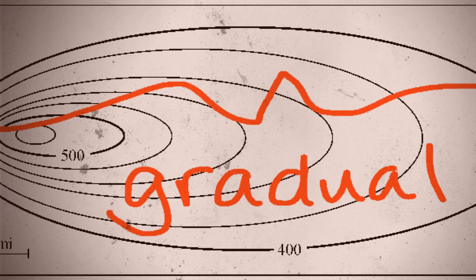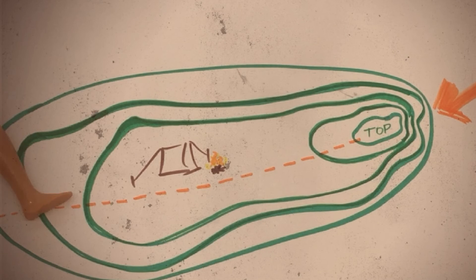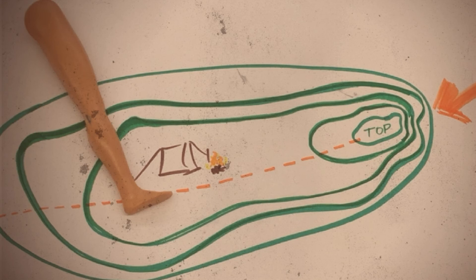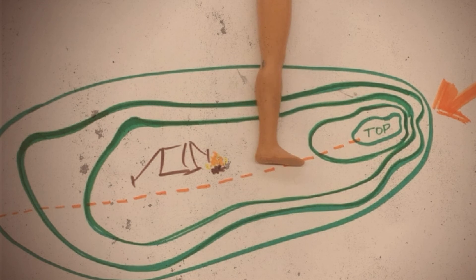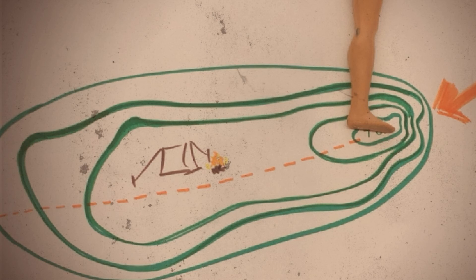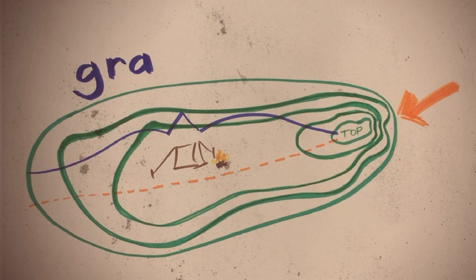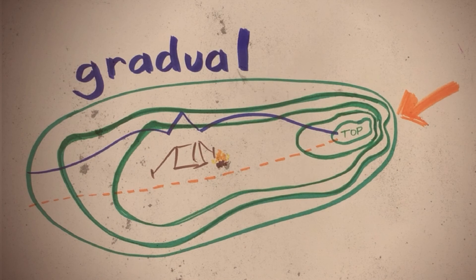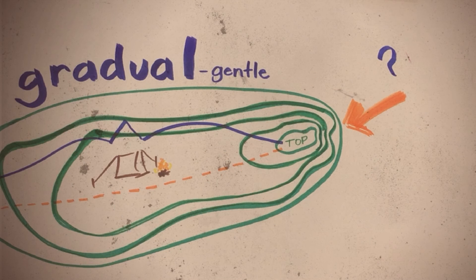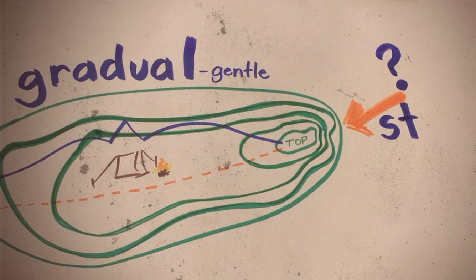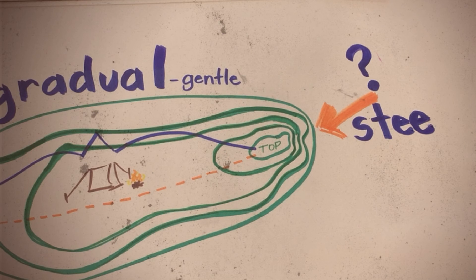These areas are better for walking, hiking, camping, resting. See how the hiker can easily trek the gradual, sloping area? Say the word gradual. It also means gentle. And what do we call the other type of elevation where the lines are super close together? Steep. Genius.